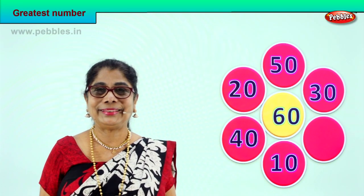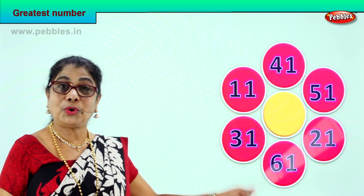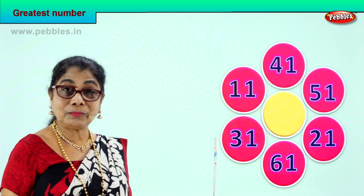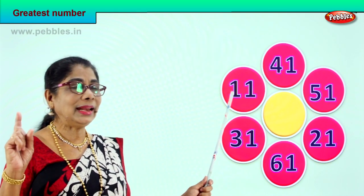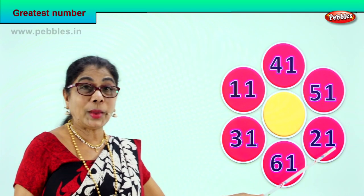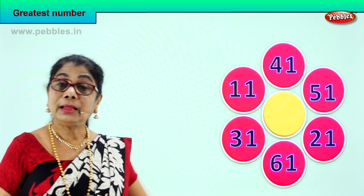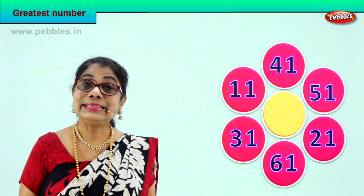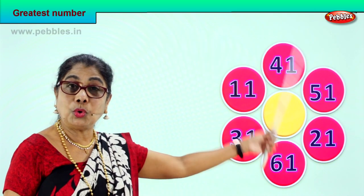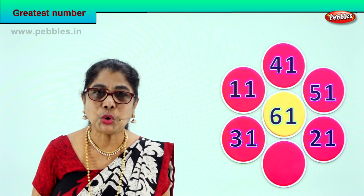Did you enjoy it? Let's take another set of numbers and you help me find the greatest number. Look — you have 61, how many tens? 6 tens. 31 — 3 tens. 11 — 1 ten. 41 — 4 tens. 51 — 5 tens. And 21 — 2 tens. Among all the numbers here, which number has the highest number of tens? Good — 6 tens. 6 tens is the biggest among all these numbers. 6 tens and 1 one — so that's 61, the greatest, biggest number, and we put it in the middle.